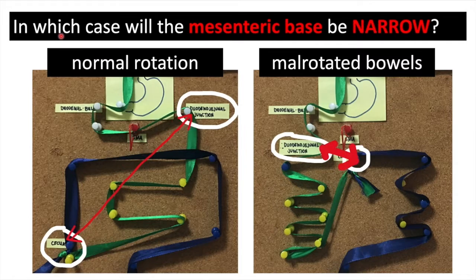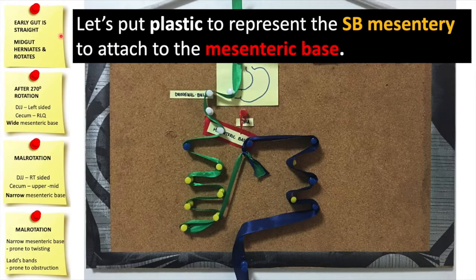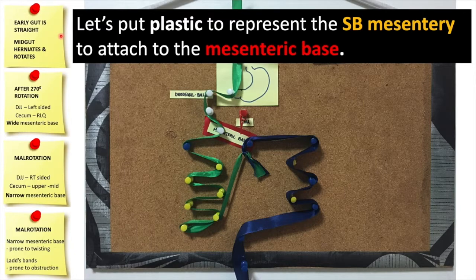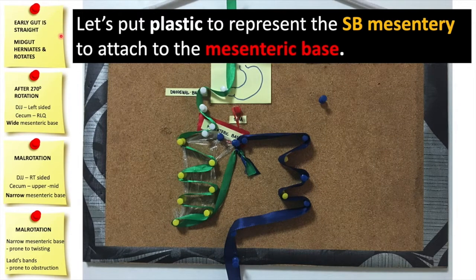Now, in which case is the mesenteric base narrow? It's here in the malrotated bowels. Let's put plastic now to represent the small bowel mesentery attaching to that narrow mesenteric base. Here you go.